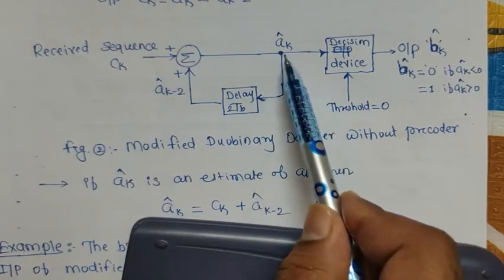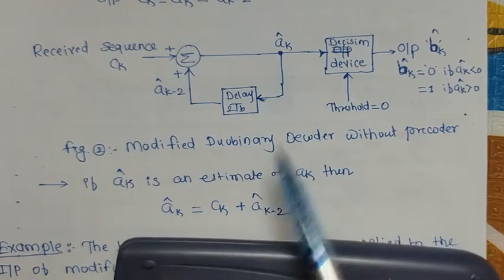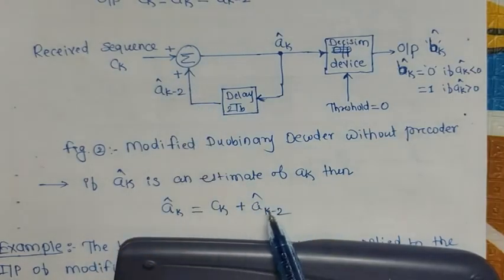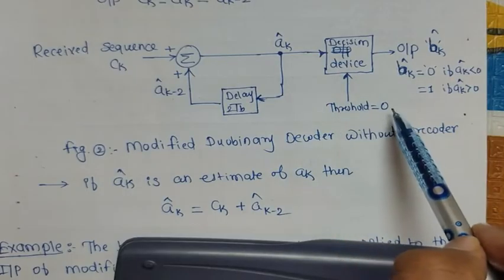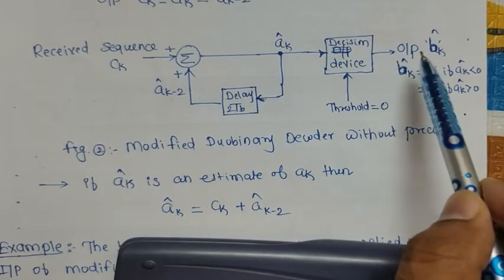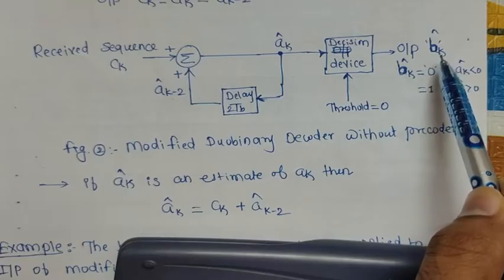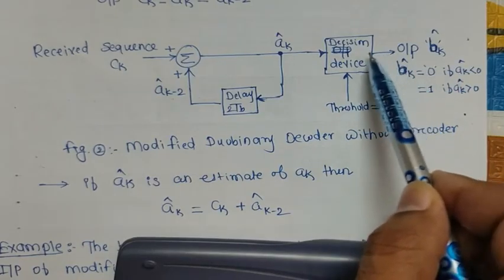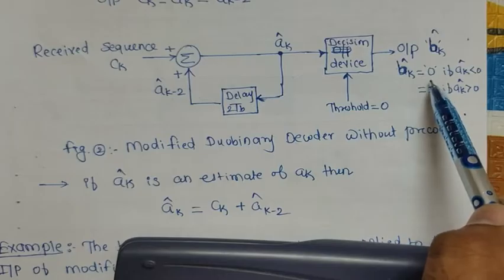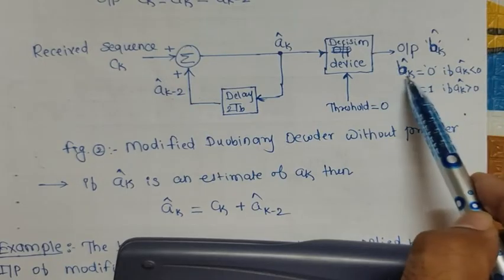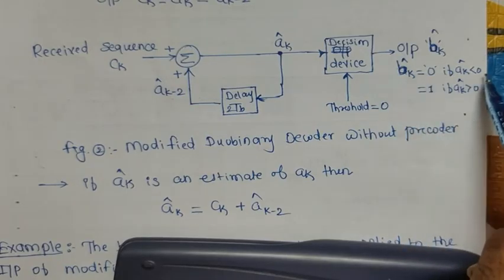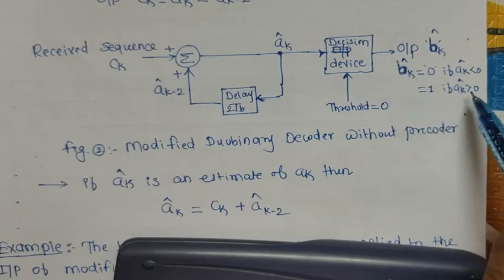The value of ak_cap is: ck plus ak_cap_minus_2. This ak_cap is then fed to a decision device with threshold level zero. The decision rule is: output bk_cap equals zero if ak_cap is less than zero, and bk_cap equals one if ak_cap is greater than zero. This decision device output is very important for recovering the original binary sequence.